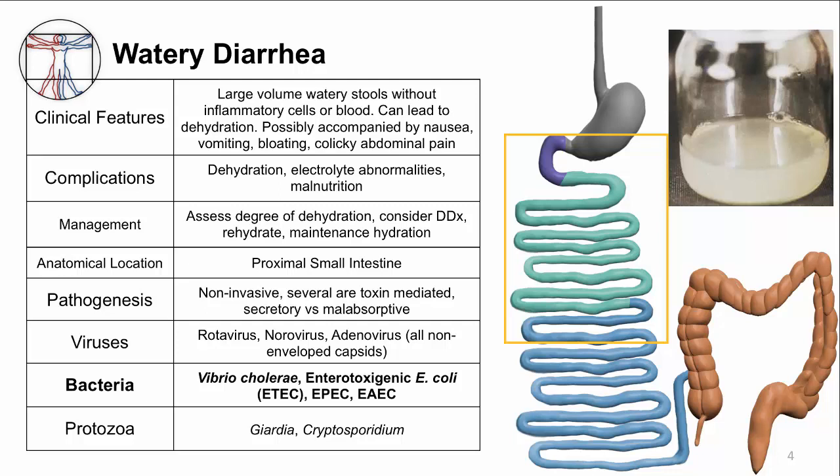Here is the summary table for watery diarrhea. Watery diarrhea affects the proximal small intestine. The classic example of the pathogenesis of watery diarrhea is toxin-mediated secretory diarrhea. The main bacteria I will discuss are Vibrio cholerae and enterotoxigenic E. coli, or ETEC. I'll also briefly discuss enteropathogenic E. coli and enteroaggregative E. coli, which also cause watery diarrhea but don't make toxins.